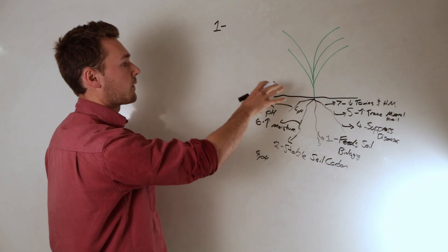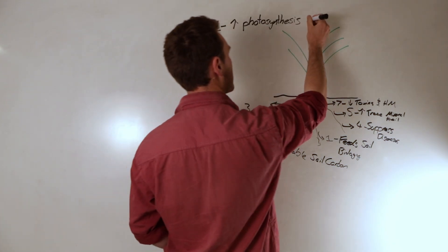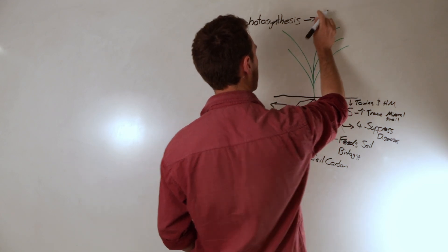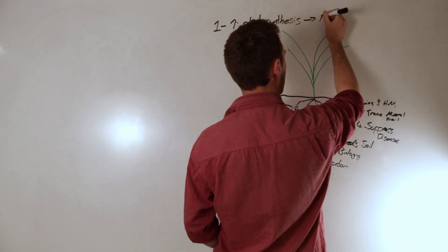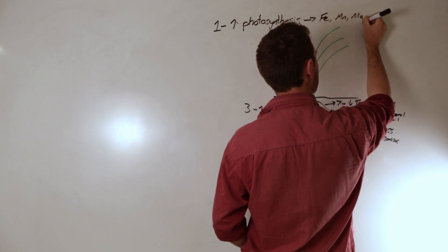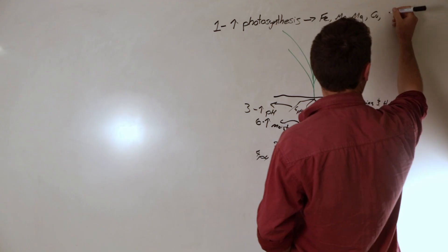Number one is increasing the amount of photosynthates that the plant has. This can be pretty easily done and this is what we did with our clients - a foliar application targeting a few trace minerals. These include iron, manganese, magnesium, copper which not often gets talked about, and phosphorus.